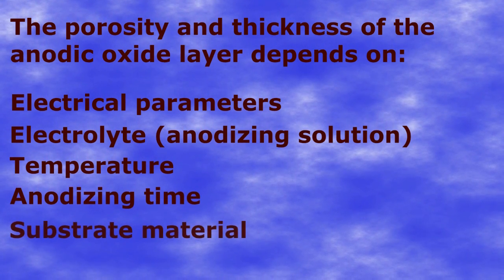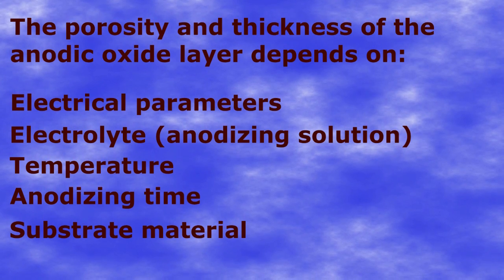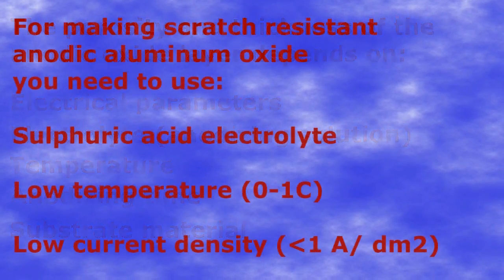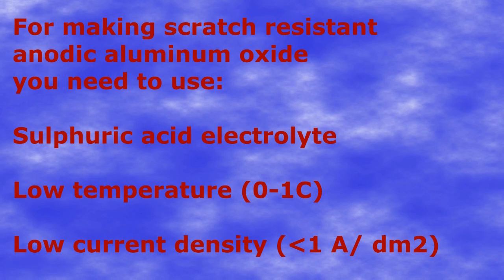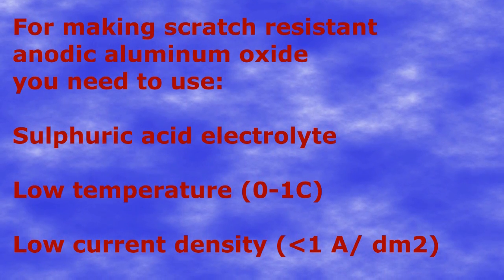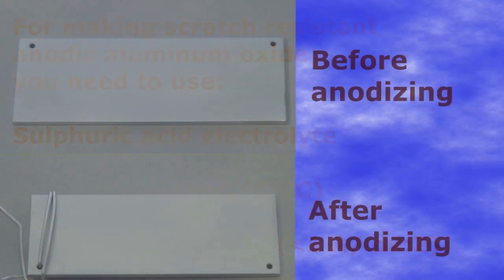For example, hard, scratch-resistant oxide layers are done with type 3 anodizing in sulfuric acid, at near freezing temperatures and with lower current densities.